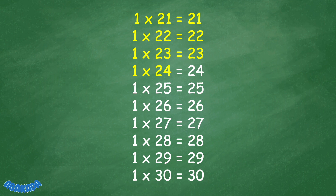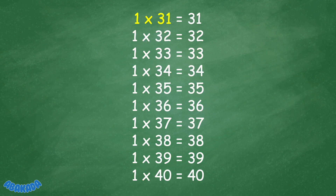1 x 24 equals 24, 1 x 25 equals 25, 1 x 26 equals 26, 1 x 27 equals 27, 1 x 28 equals 28, 1 x 29 equals 29, 1 x 30 equals 30, 1 x 31 equals 31.